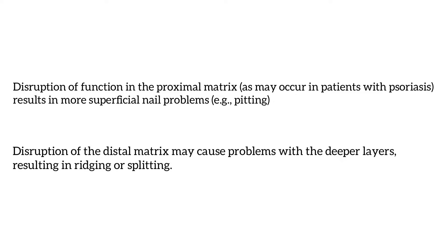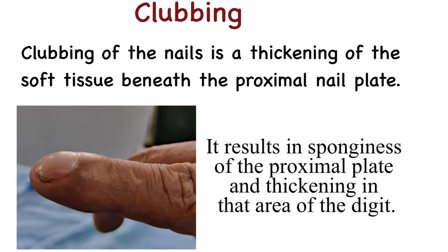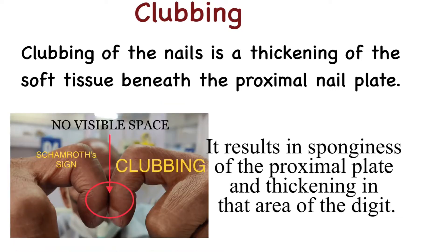Now let us briefly discuss some of the commonly seen nail changes in systemic diseases. Clubbing of the nails is a thickening of the soft tissue beneath the proximal nail plate. It results in sponginess of the proximal plate and thickening in the area of the digit.